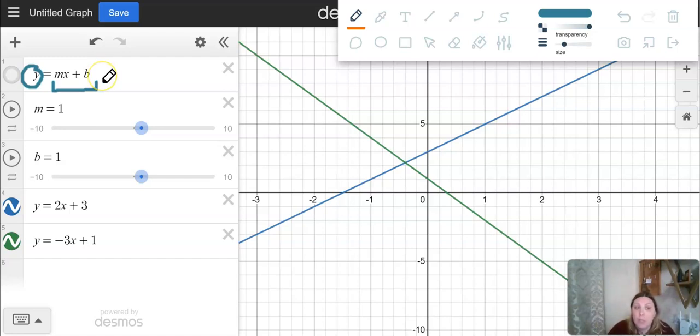So what does the slope intercept form give us? Well, it has y and x and it has two numbers right here and right here, m and b, right? So in this case m is 2 and b is 3. Over here in this case m is negative 3, b is 1. There could be any numbers you can think of.